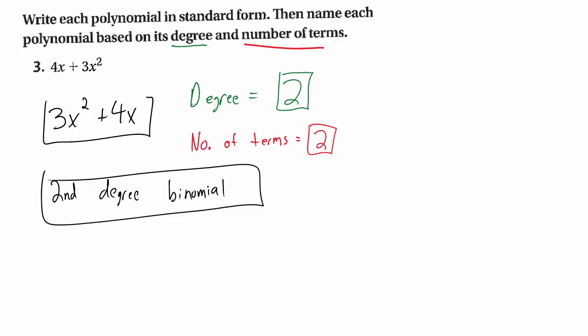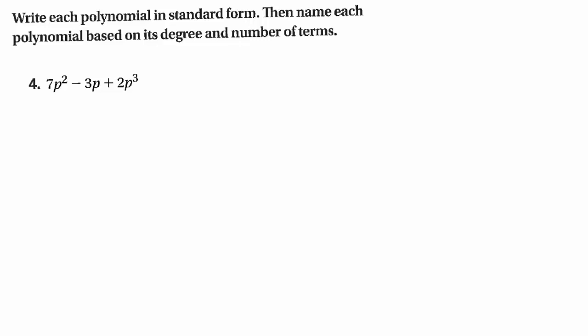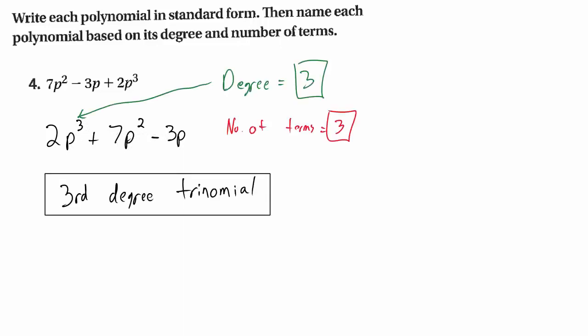So this polynomial in standard form is a second degree binomial. For number 4, we do the same thing. The highest power is 3, so we write that monomial first, then the second power in the middle, and the first power at the end. The polynomial's degree is 3, and the number of terms is 3 — so we call this a third degree trinomial.